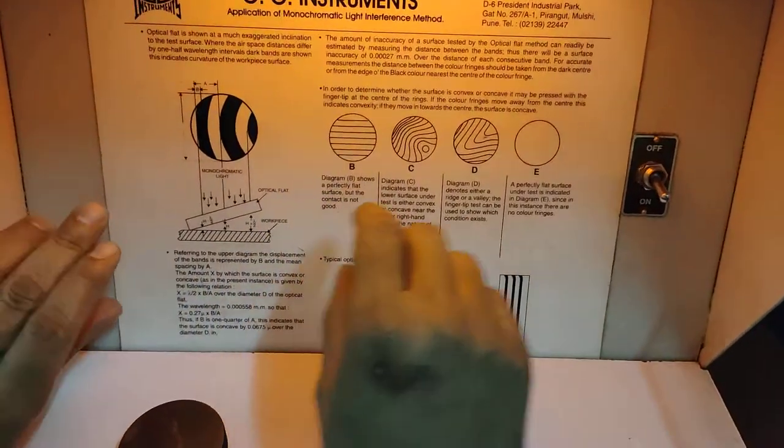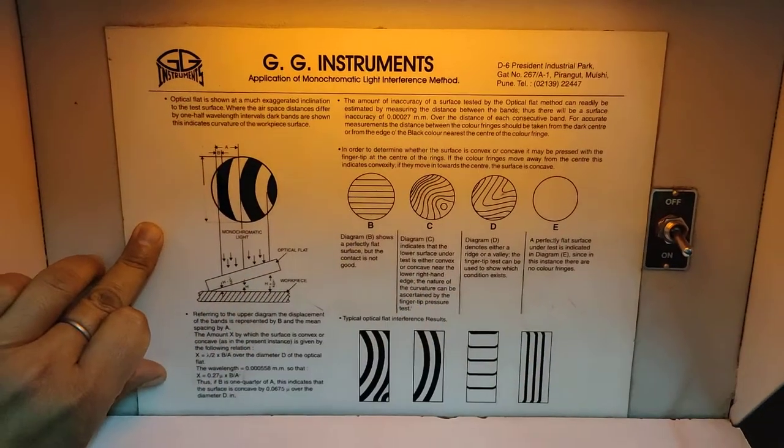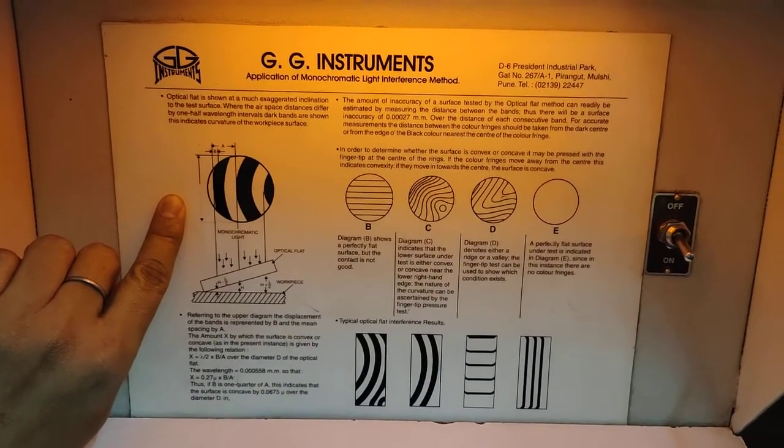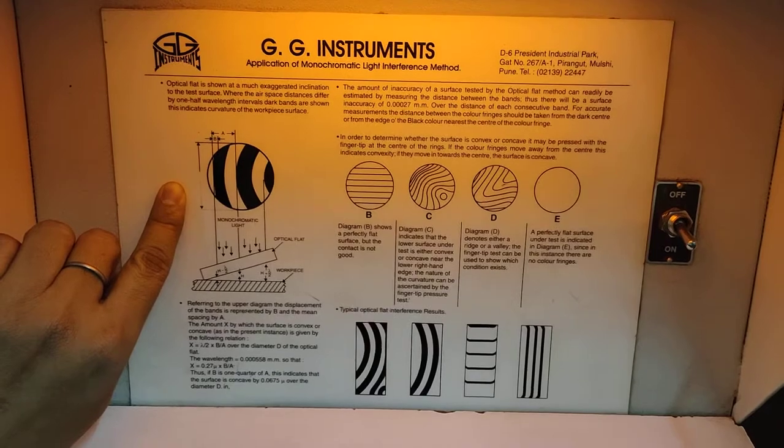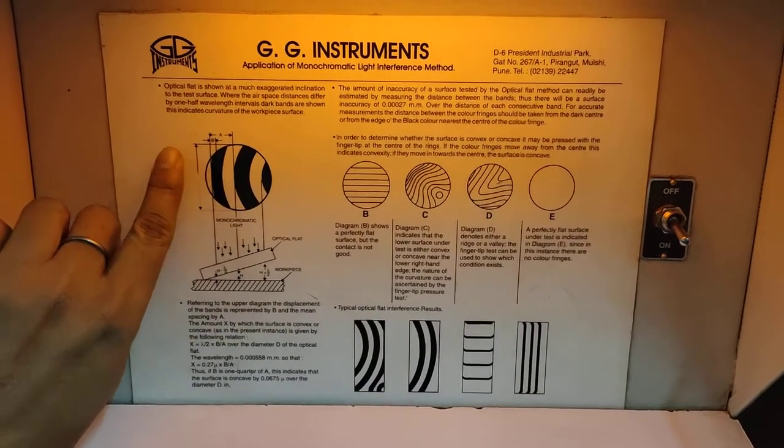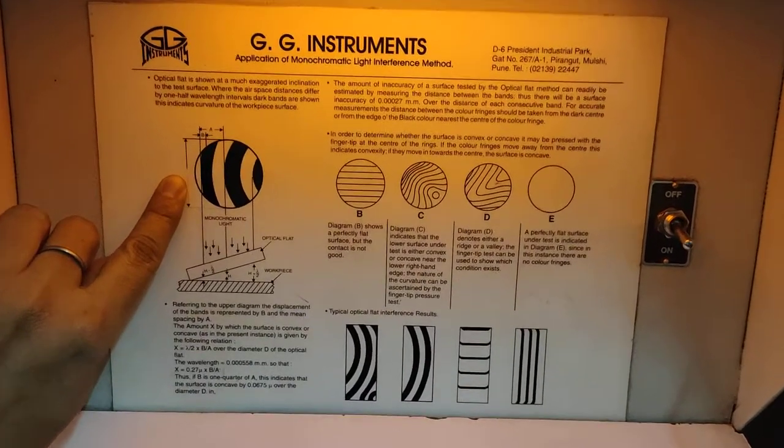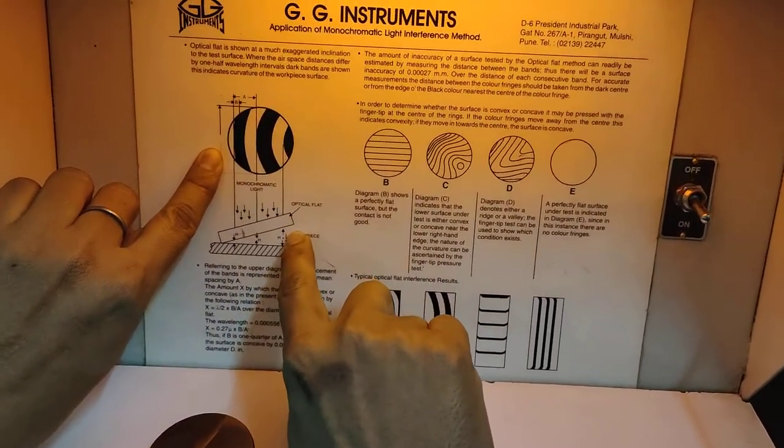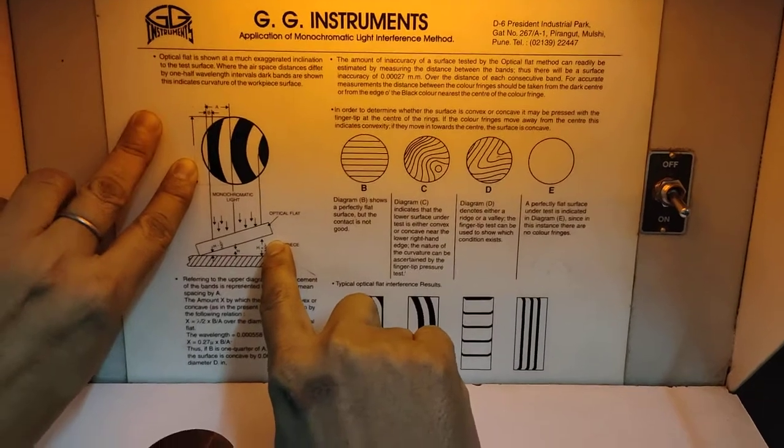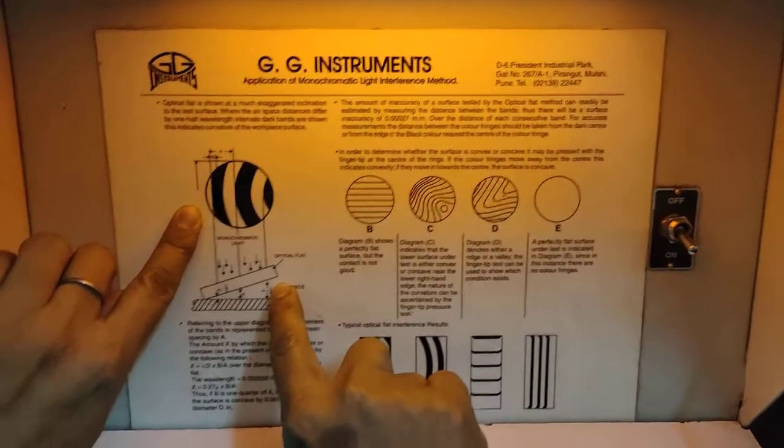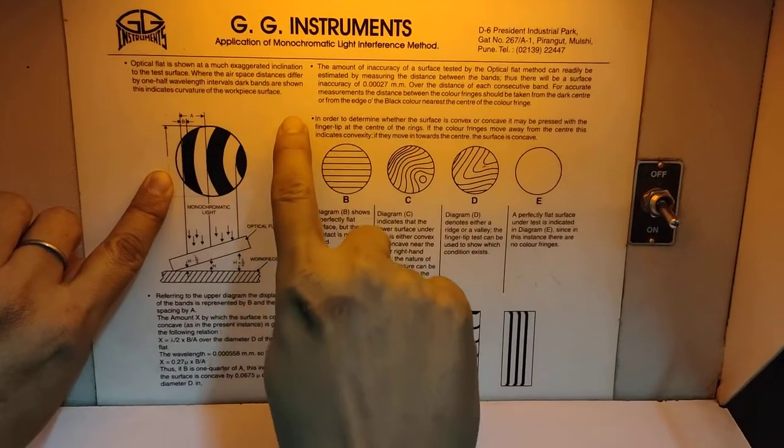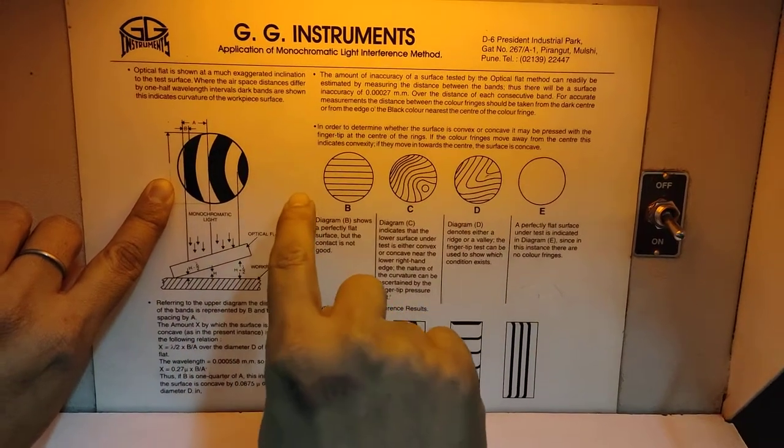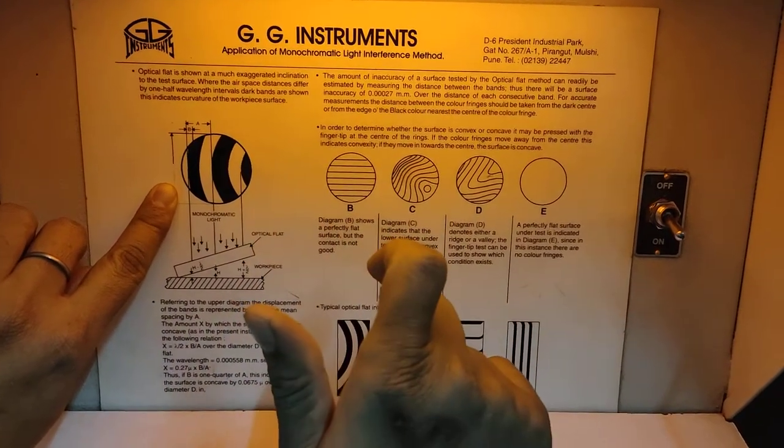Coming back to the fundamental principle, this is the optical flat shown with much exaggerated inclination to the test surface, where air space distances differ by one-half wavelength intervals. Dark bands are shown; these dark bands indicate curvature on the workpiece surface.